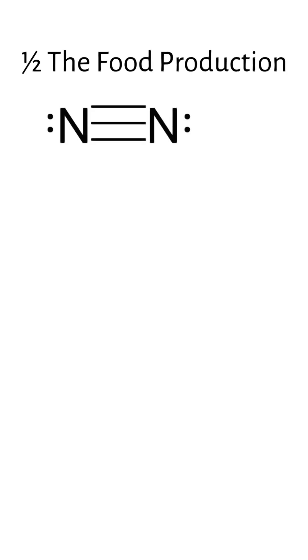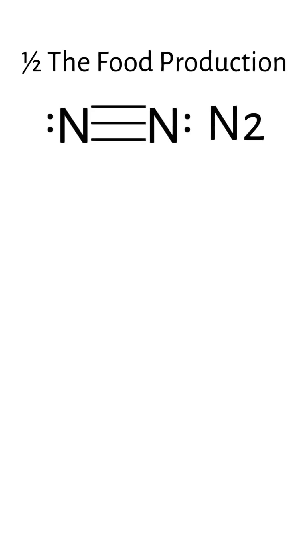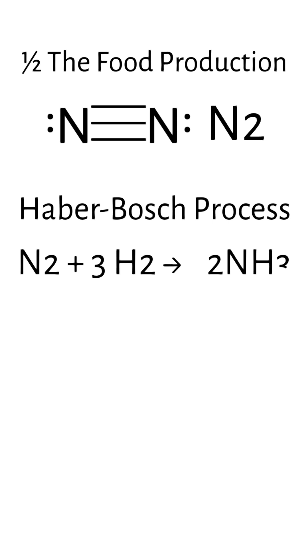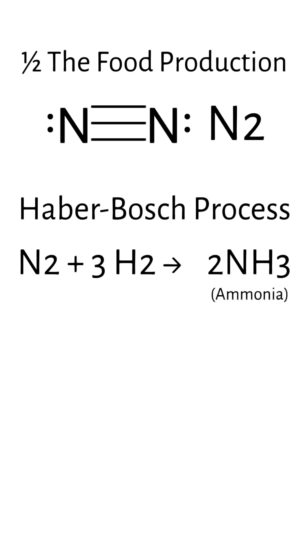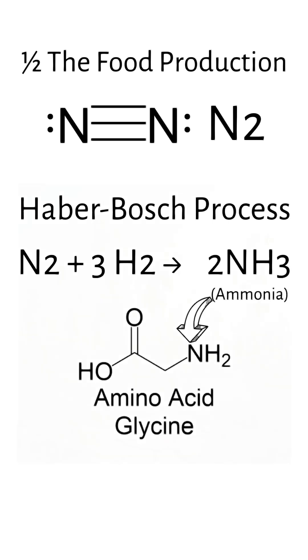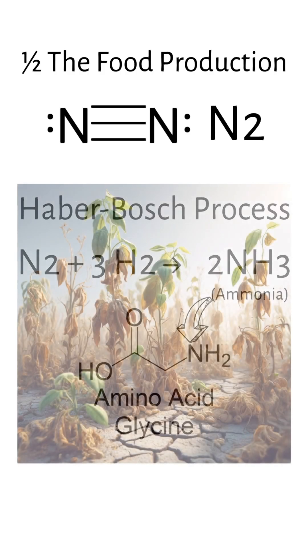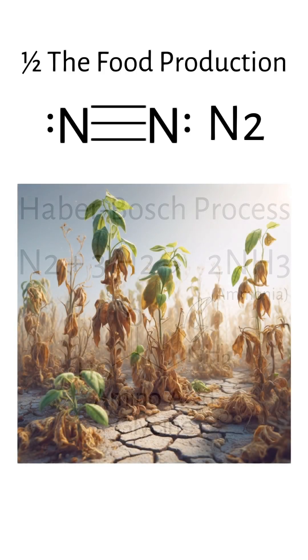Half the food production relies on nitrogen because it is subjected to the Haber-Bosch process to make ammonia, which plants use to make amino acids, the building blocks of proteins. Without this fertilizer, plants grow much slower or not at all.